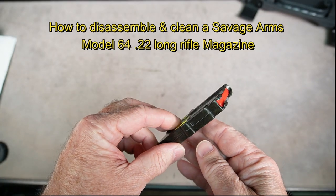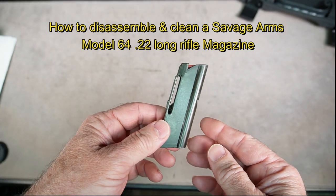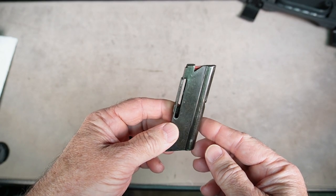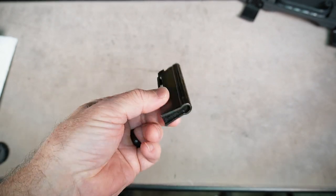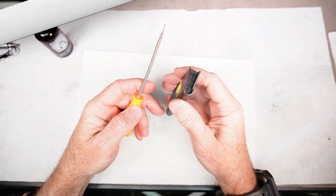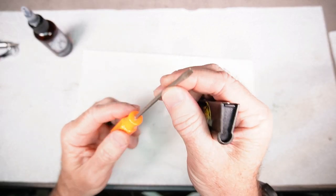Today I'm going to show you how to disassemble and clean a Savage 64 magazine, a 22 caliber long rifle magazine. It's fairly simple and straightforward. This information is not in the manual. You want to get a screwdriver that's got a pretty thin blade on it.